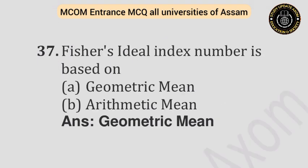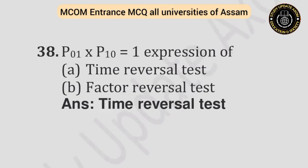Question number thirty-seven: Fischer's ideal index number is based on — Option A: Geometric mean. Option B: Arithmetic mean. Answer is geometric mean. Question number thirty-eight: P01 × P10 = 1 is an expression of — Option A: Time reversal test. Option B: Factor reversal test. Answer is time reversal test.